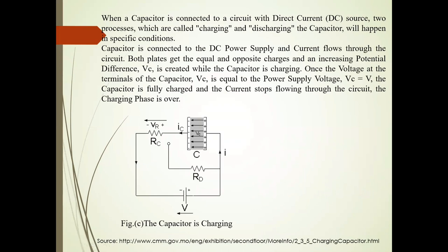Now, what is charging and what is discharging? When a capacitor is connected to a DC current source, two processes happen: charging and discharging. When the capacitor is connected to a DC power supply and current flows through the circuit, both plates get equal and opposite charges and a potential difference VC is created.